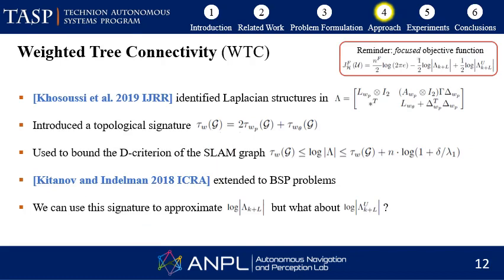Observing the structure of the posterior information matrix, it turns out that it has weighted Laplacian-like structures. Based on these Laplacians and the connection to Kirchhoff's theorem, Kossuss et al. introduced the weighted tree connectivity signature and showed that it bounds the D-criterion of the SLAM graph. Kitanov and Indelman further extended this into belief space planning for the unfocused case. We can use these to approximate the first term, but what about the second term? Can we find a graph with a topological signature based on Kirchhoff's theorem to approximate it as well?